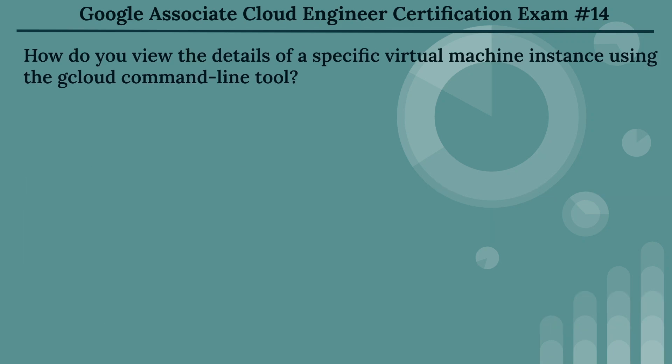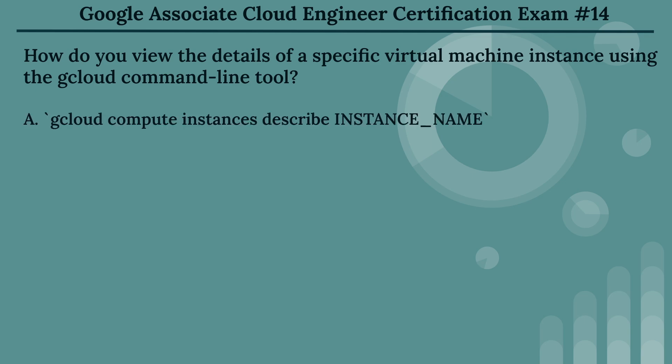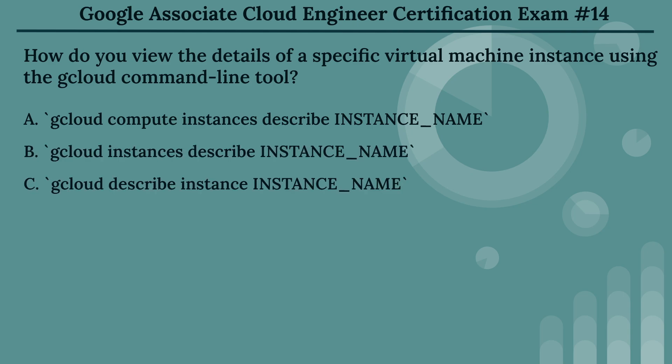The fourteenth question: how do you view the details of a specific virtual machine instance using the cloud command line tool? The options are: Option A, gcloud compute instances describe INSTANCE_NAME. Option B, gcloud instances describe INSTANCE_NAME. Option C, gcloud describe instance INSTANCE_NAME. Option D, gcloud compute describe INSTANCE_NAME.